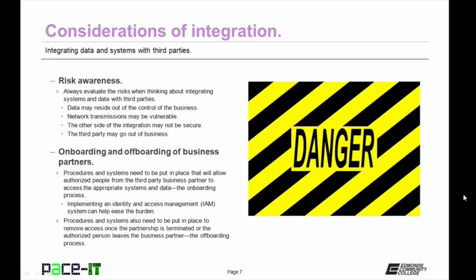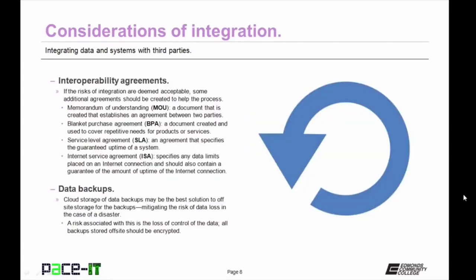The onboarding and offboarding of business partners is another consideration. Procedures and systems need to be put in place that will allow authorized people from the third party business partner to access the appropriate systems and data within your network — this is the onboarding process. Procedures and systems also need to be put in place to remove access once the partnership is terminated or the authorized person leaves — this is the offboarding process.